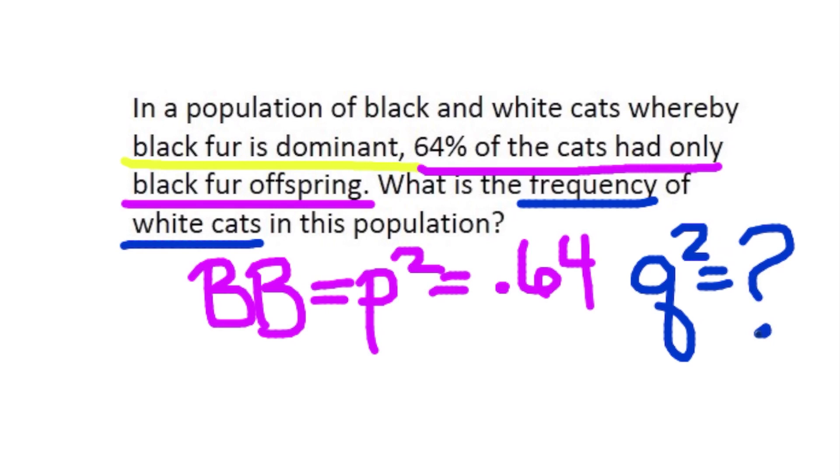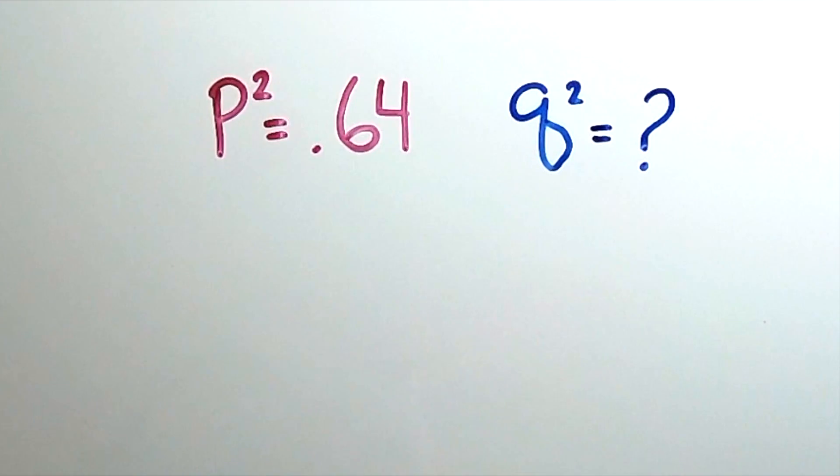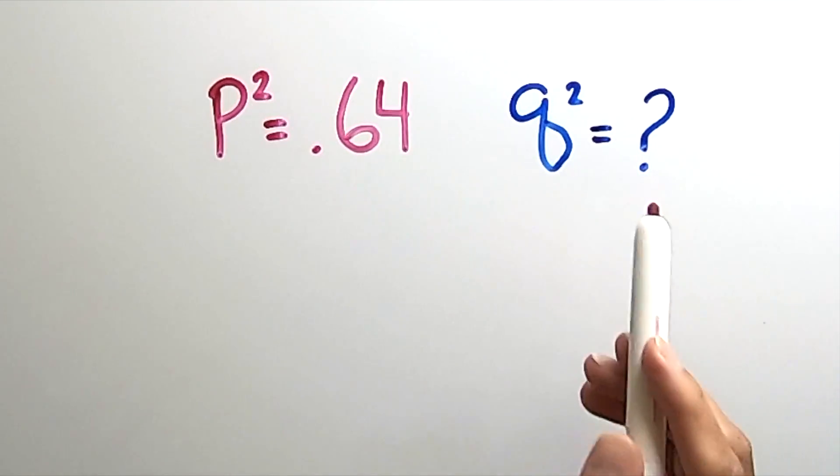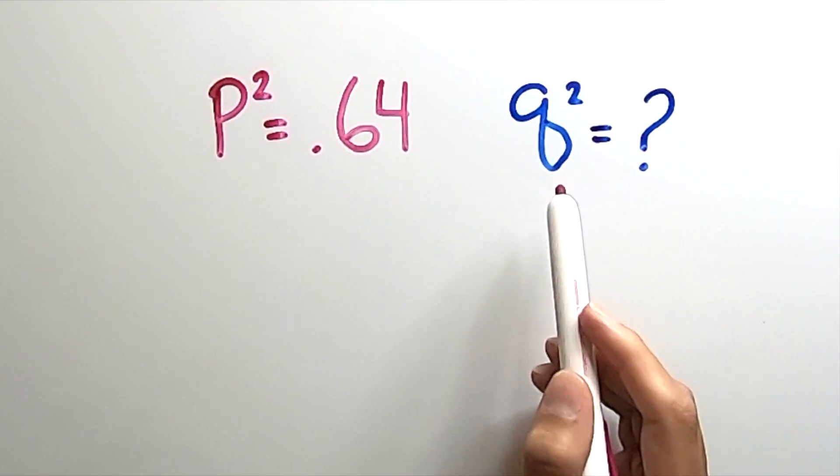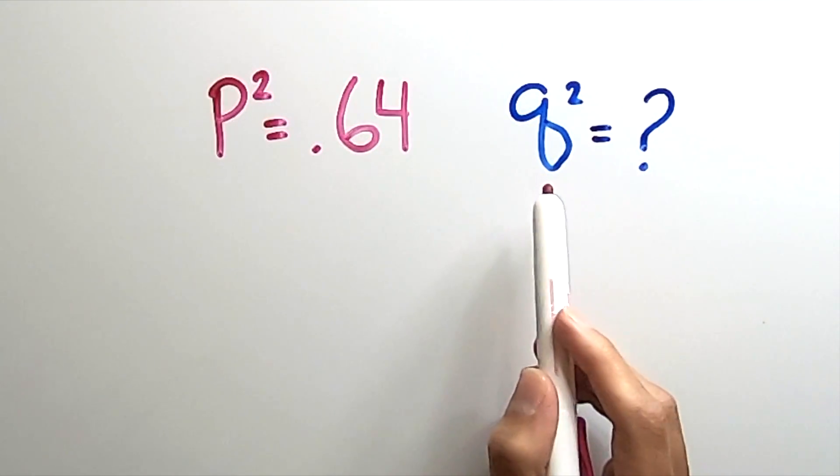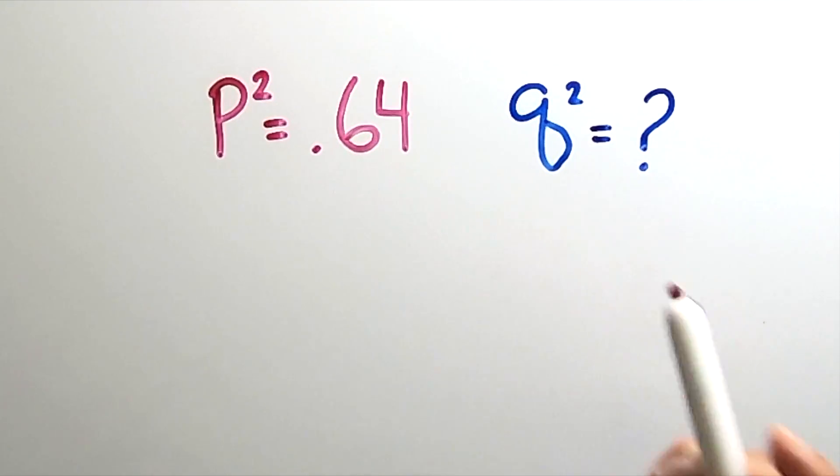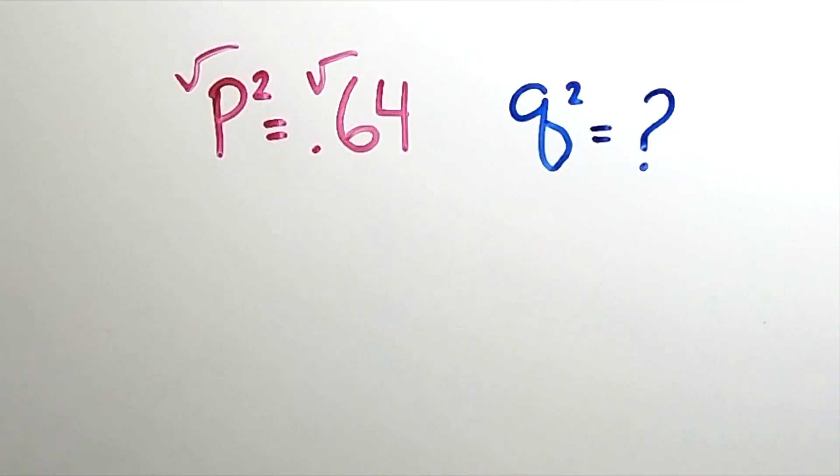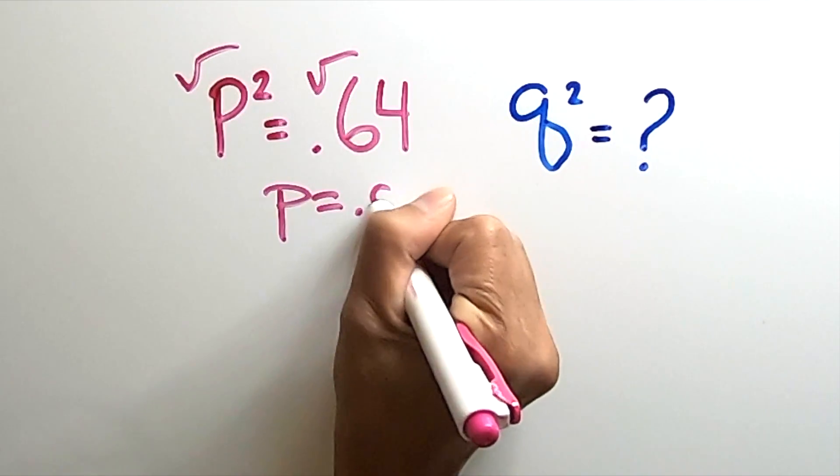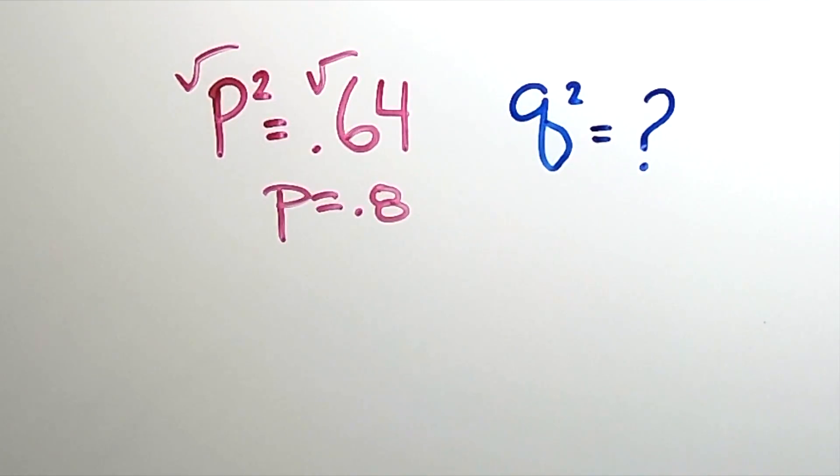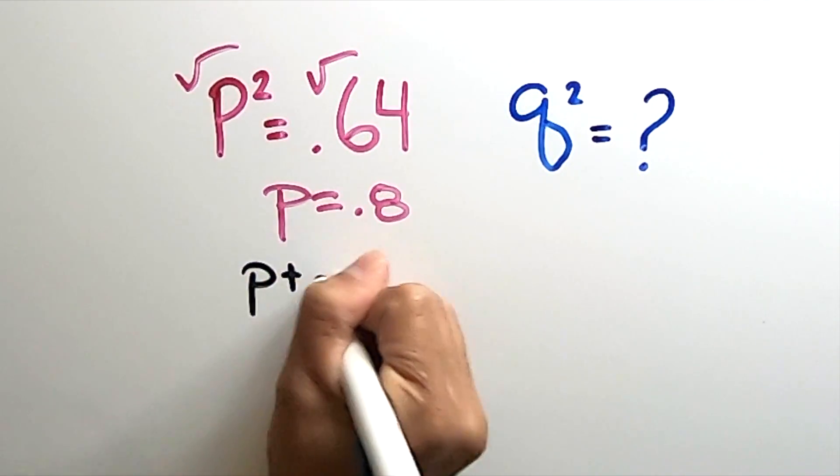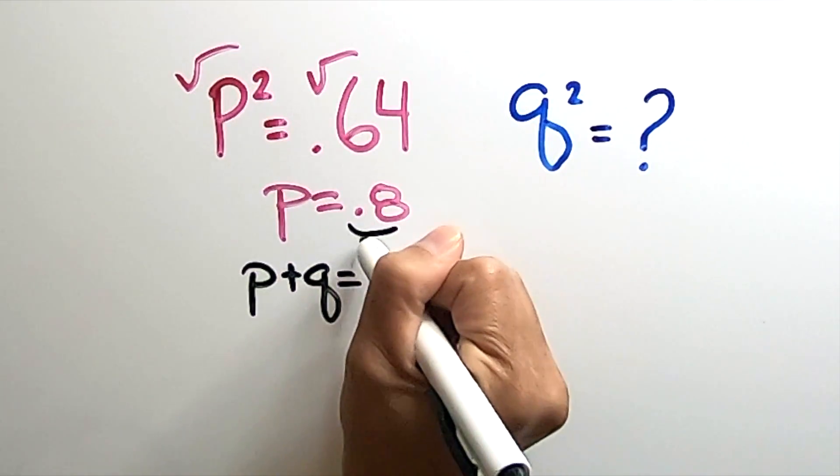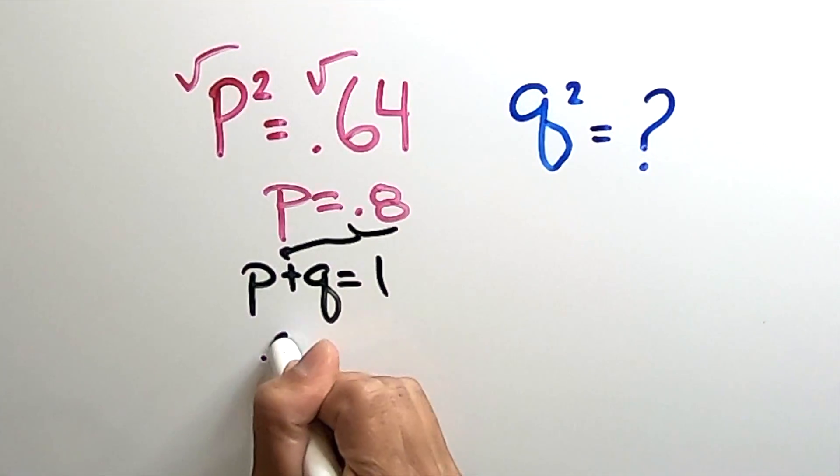So let's see how to solve it. So we were given the homozygous dominant genotype, p² = 0.64. And we're asked for the homozygous recessive phenotype, white cats, q². So what do we do? Well, let's start by square rooting the p² to get p = 0.8. Then we'll use our p + q = 1 formula and plug in the 0.8 for the p and solve for q.